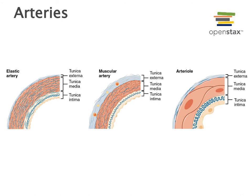Arterioles are the smallest arteries and also have a thick tunica media relative to the three layers of their wall. This smooth muscle of the tunica media allows the small arterioles to constrict, decreasing their diameter. Because arterioles have a small diameter, they contribute the majority of total peripheral resistance, which helps to maintain blood pressure, and arterioles can regulate the distribution of blood into capillary beds.